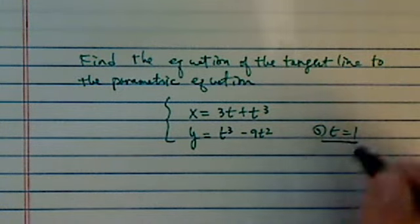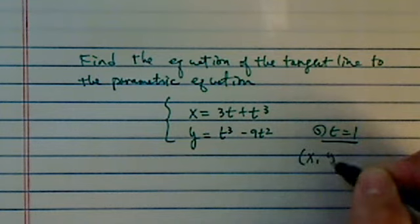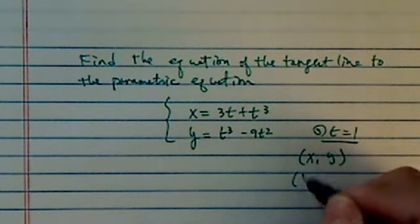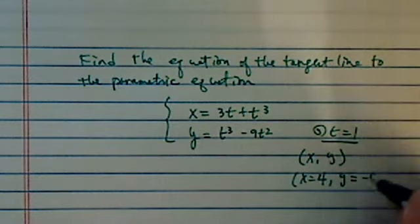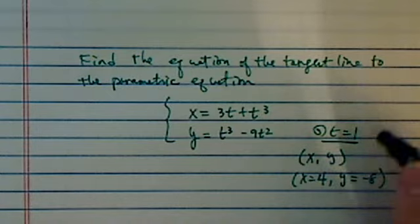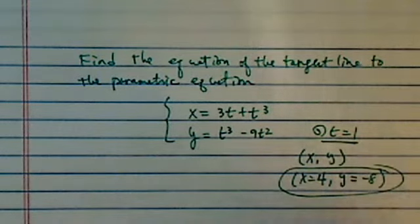So let's find where that t equal to 1 would x and y equal to on the curve. x is equal to 1 plus 3, that's 4, and y is equal to 1 minus 9, that's minus 8. So this one is basically at point of 4 and minus 8.